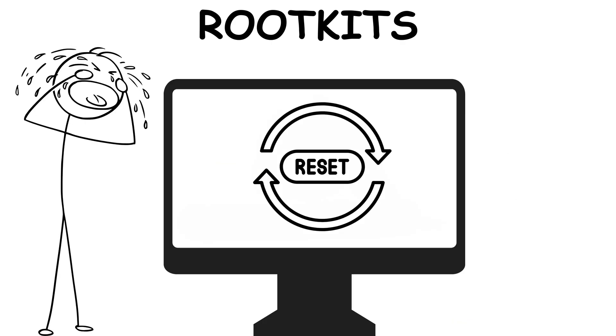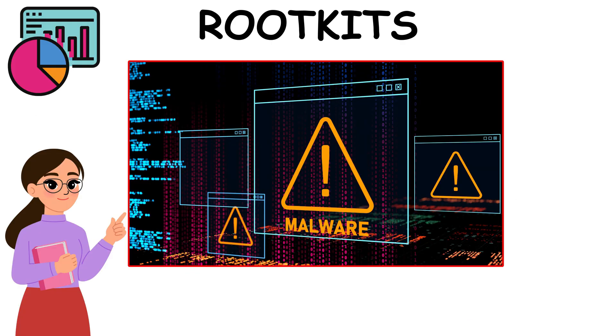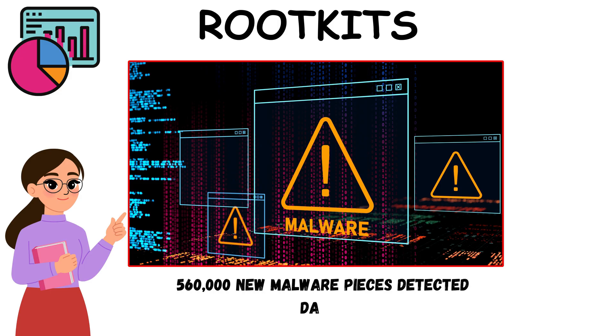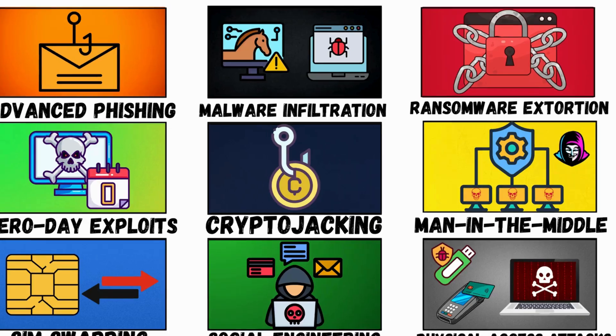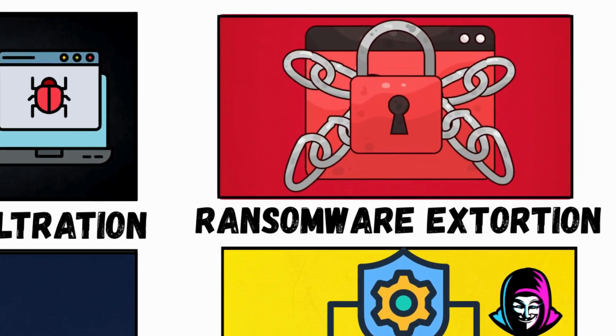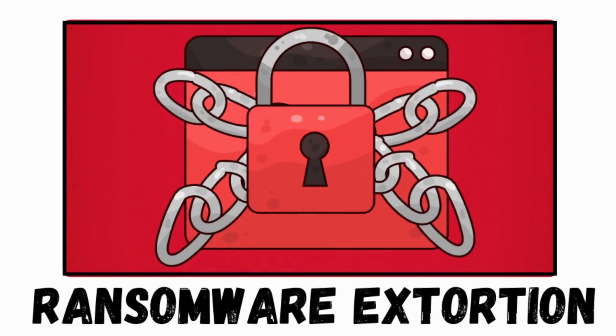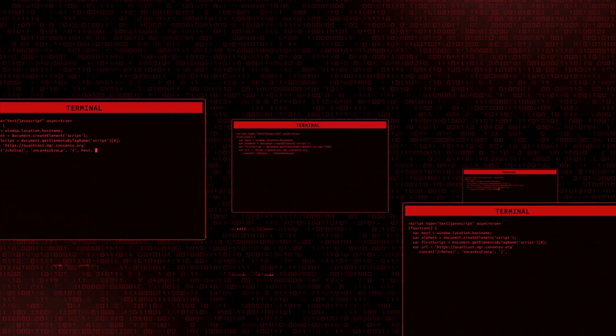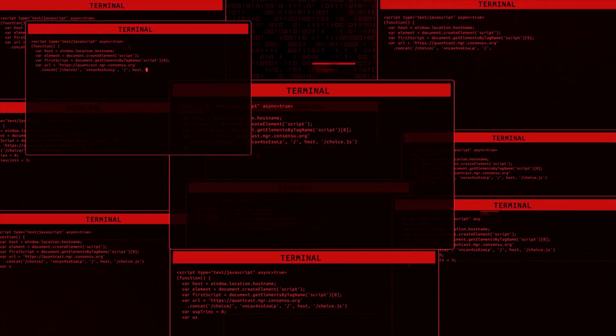Rootkits are buried in your OS kernel — they disable antivirus, log keystrokes, and let hackers permanently own your device. Removal often requires wiping your entire system. Statistic: 560,000 new malware pieces are detected daily.